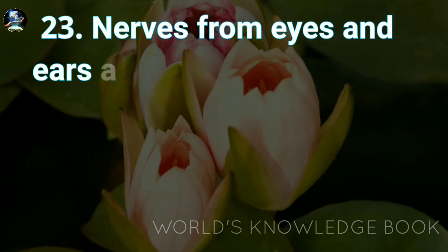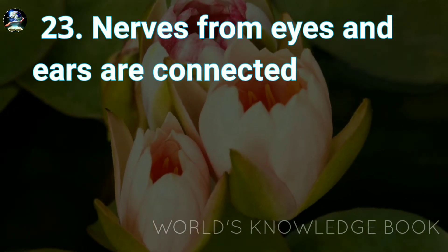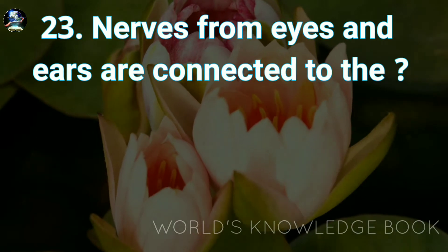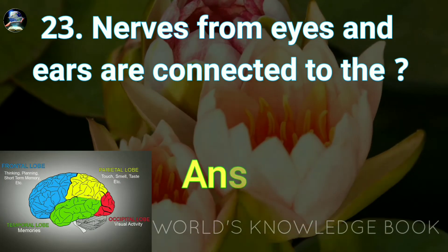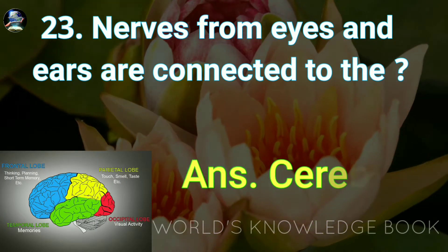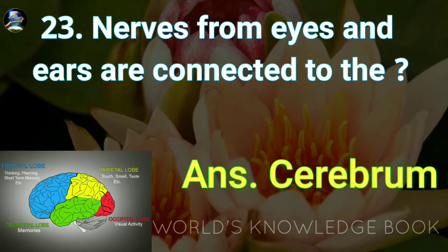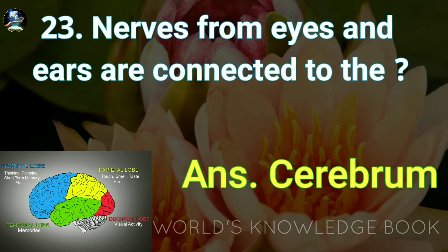Nerves from eyes and ears are connected to the cerebrum.